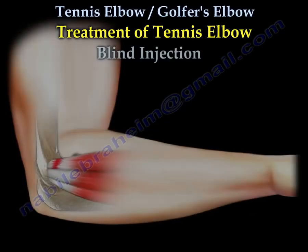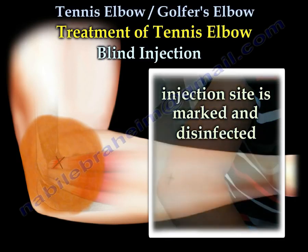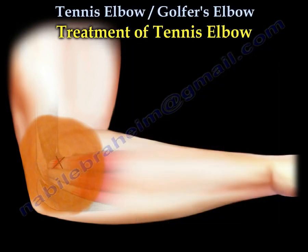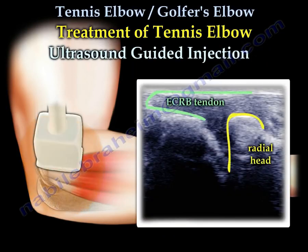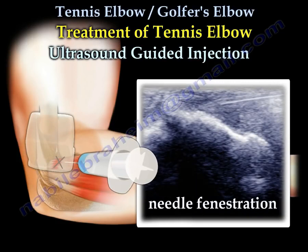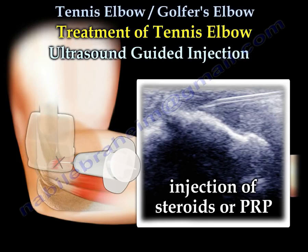For the blind injection, the site is marked, the skin is disinfected, and the therapeutic fluid is injected into the selected marked site. For the ultrasound-guided technique, the radial head and tendon are identified under ultrasound guidance. The needle is inserted and guided through the tendon into the bony area of the lateral epicondyle, and fenestration of the tendon is done in conjunction with injection of the fluid — either steroids or platelet-rich plasma.